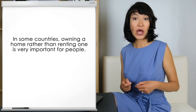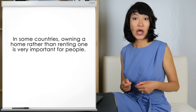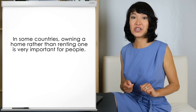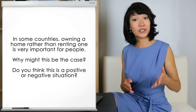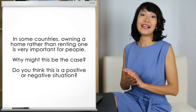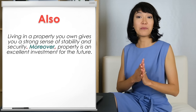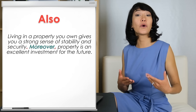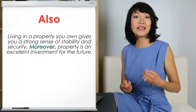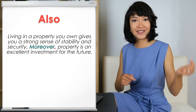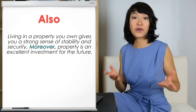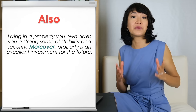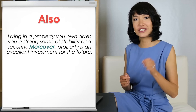This time I'm going to use a different Task 2 essay topic: 'In some countries, owning a home rather than renting one is very important for people. Why might this be the case? Do you think this is a positive or negative situation?' Look at this example with two important points: 'Living in a property you own gives you a strong sense of stability and security. Moreover, property is an excellent investment for the future.' Joining two ideas like this — in two sentences with the second beginning with MOREOVER, FURTHERMORE, or IN ADDITION, all usually followed by a comma — is an excellent way to present your ideas in a Task 2 essay.